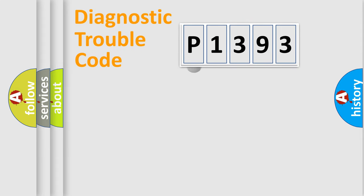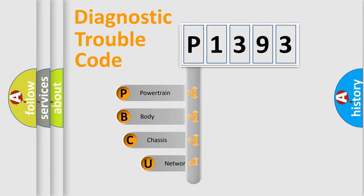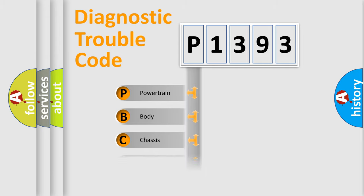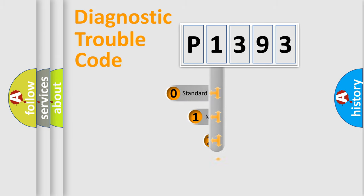First, let's look at the history of diagnostic fault code composition according to the OBD-2 protocol, which is unified for all automakers since 2000. We divide the electric system of an automobile into four basic units: Powertrain, Body, Chassis, and Network. This distribution is defined in the first character of the code.